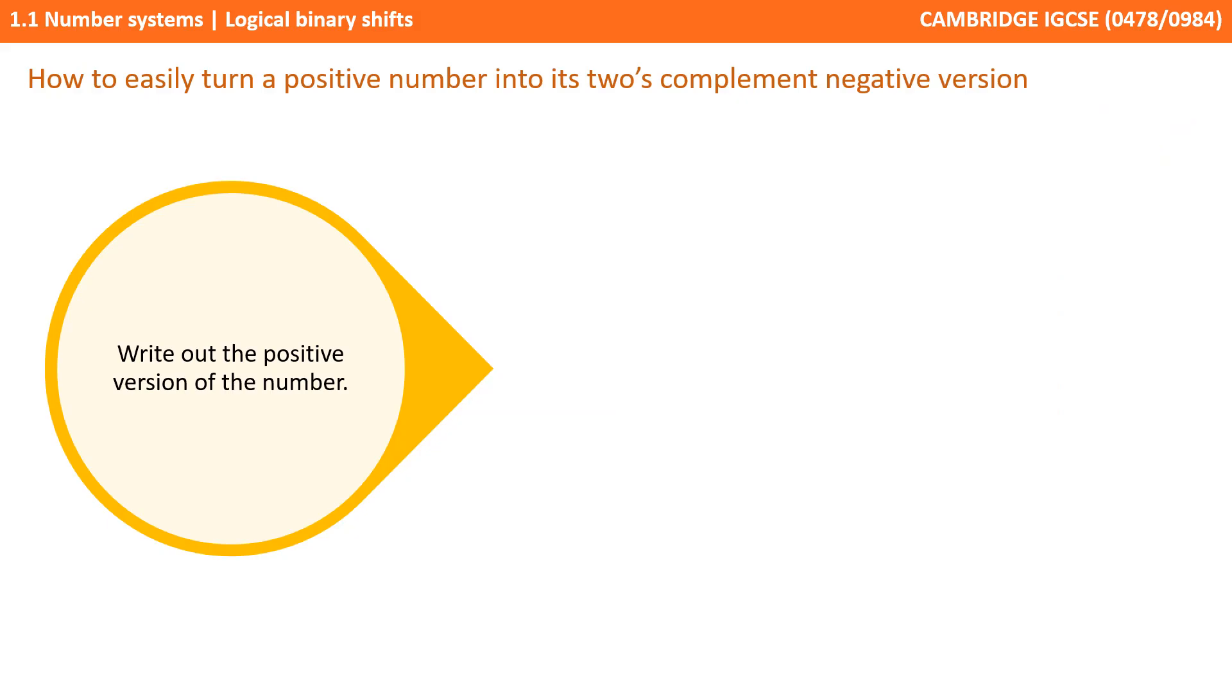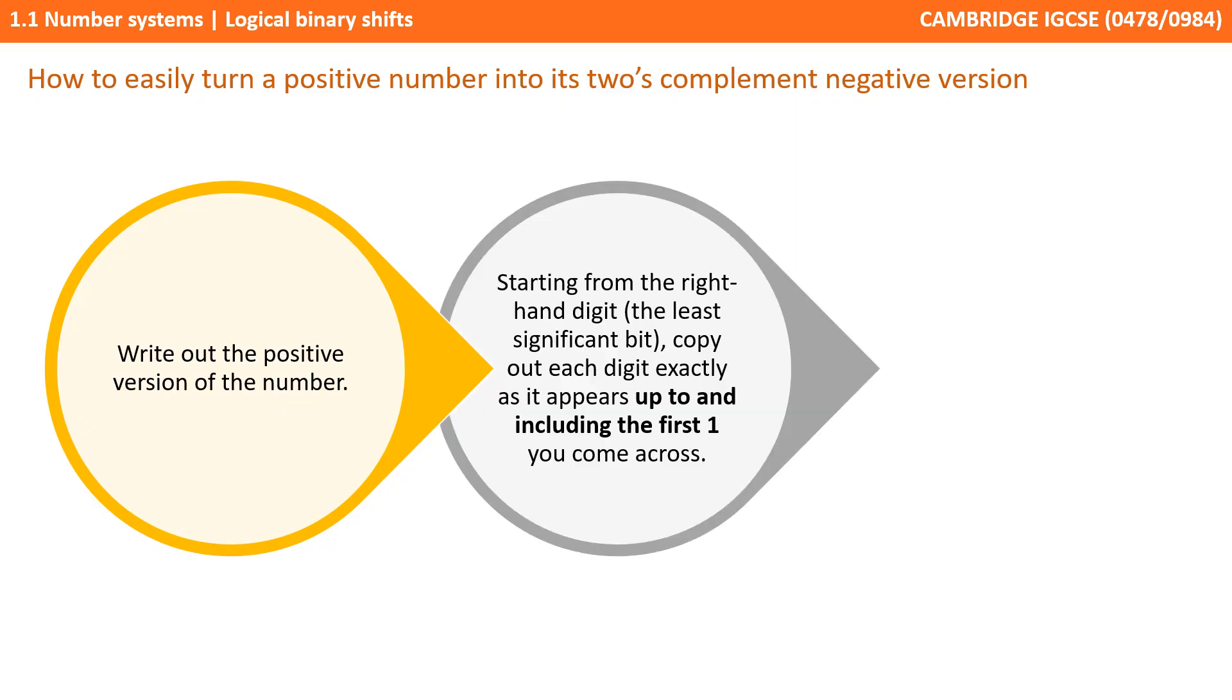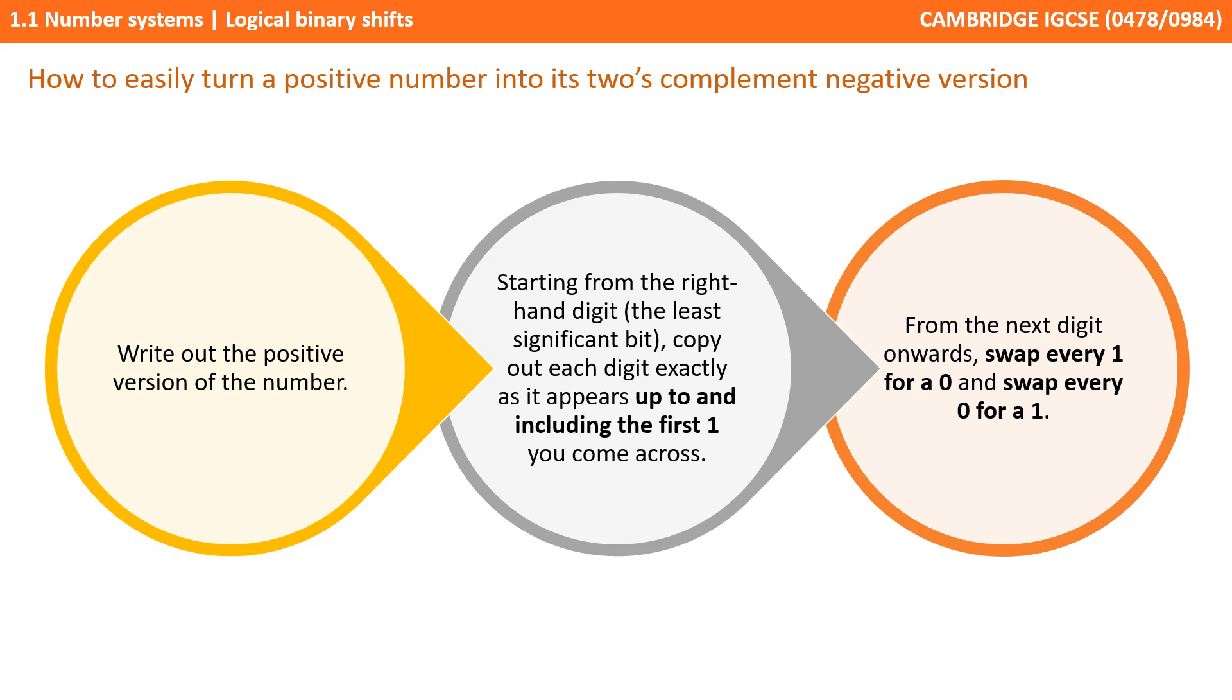Now, there is actually a really neat trick that you can use that always works, which turns a 2's complement number into its negative version. So the process is as follows: start by writing out the positive version of the number. Then starting from the most right-hand digit, the least significant bit, you copy out each digit exactly as they appear, up to and including the first 1 you come across. After this point, you continue, but now you swap every 1 for a 0 and every 0 for a 1.